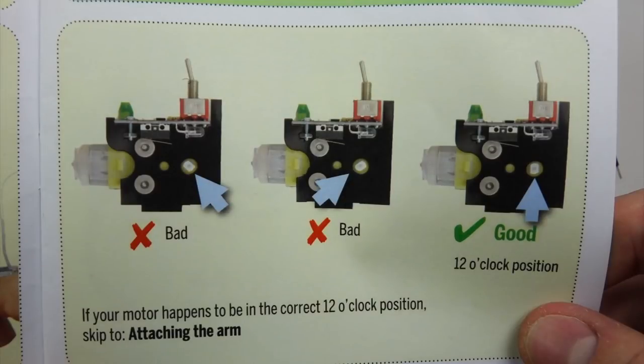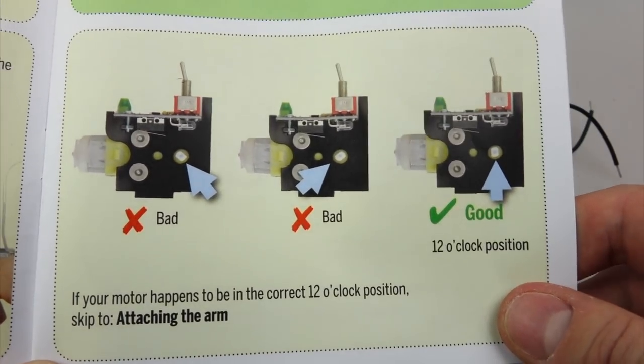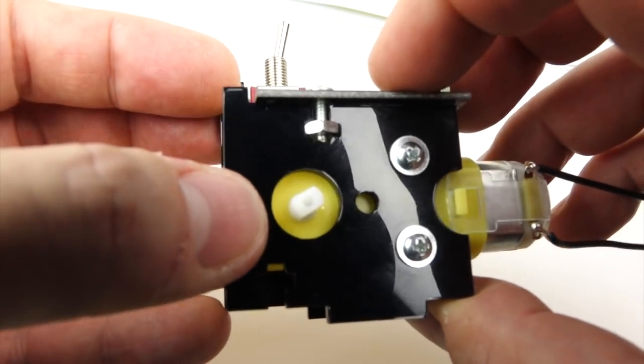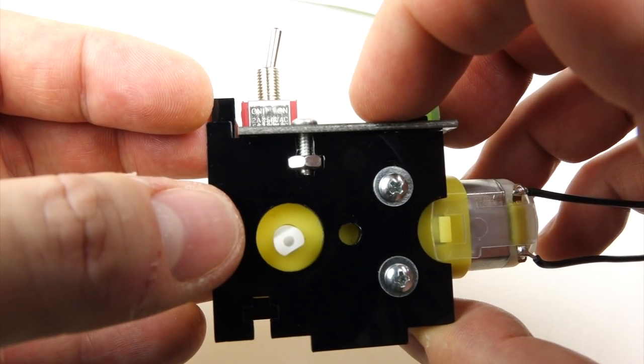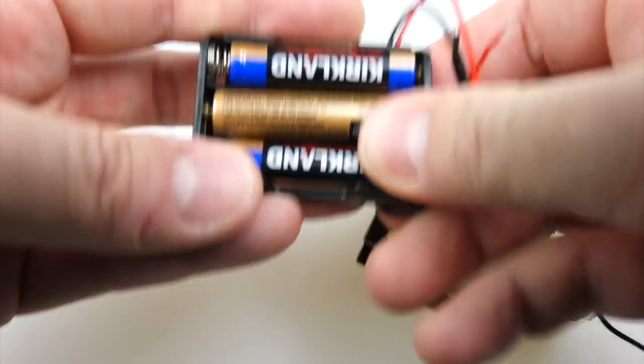Now the next thing is I have to get the motor in the right position. It's got to face completely upright, like vertical, and as you can see mine is diagonal. I can't twist it by hand, you're not supposed to do that, that will damage it. What you have to do is attach the battery to the motor just for a few seconds and have it spin round.